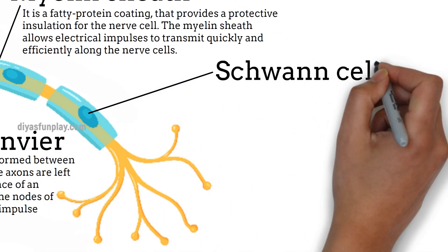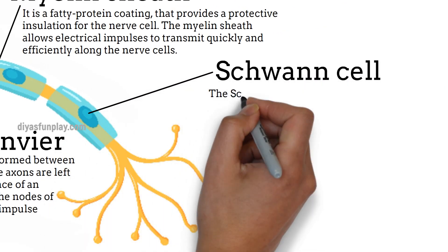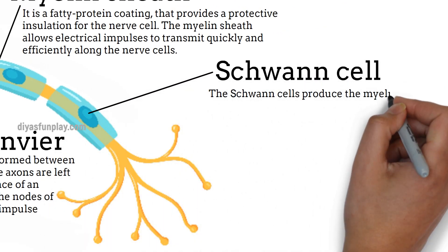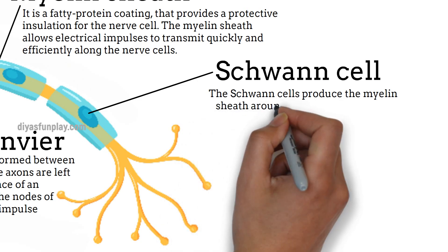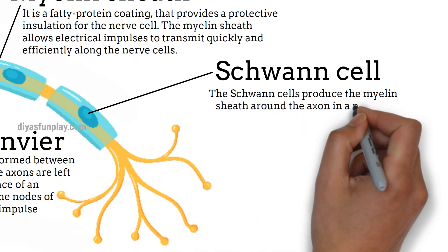The Schwann cells produce the myelin sheath around the axon in a neuron.